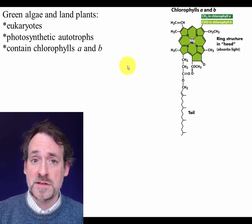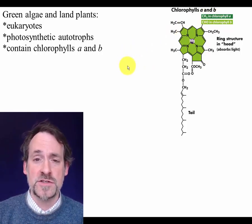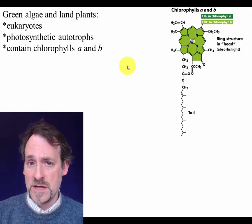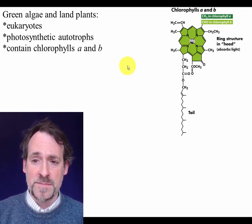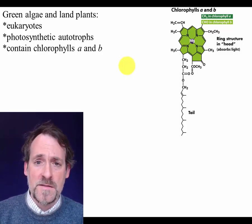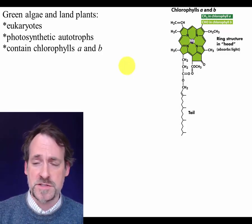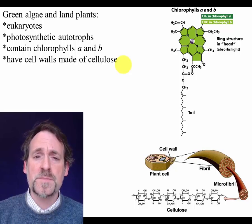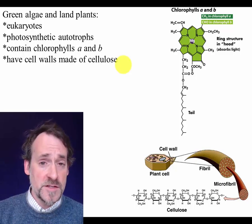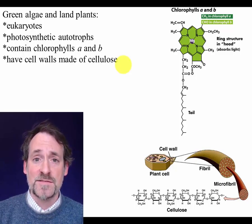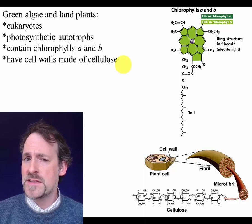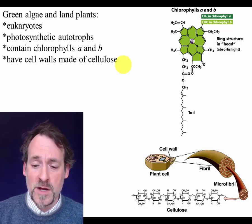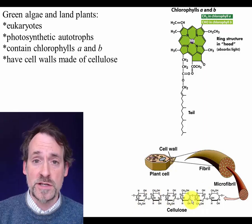As I mentioned two lectures ago, there are a lot of different light-gathering pigments. But chlorophyll A and B are the ones that typify the plants as well as the green algae. In addition, like fungi, plants have cell walls. But in this case, they're not made of chitin — they're made of a different polysaccharide called cellulose.